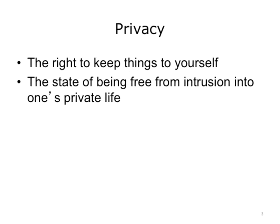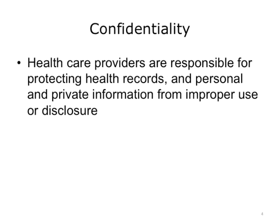It's important to understand the difference between privacy, confidentiality, and security. Privacy is a patient's right to control disclosure of their information — they can place restrictions on who can see it or who it is disclosed to. Confidentiality refers to the health care provider's responsibilities to ensure that patient data is not used or disclosed without proper authorization. Unauthorized means the patient did not give permission. There are exceptions for disclosure for public health activities, which we'll talk about later in this unit.